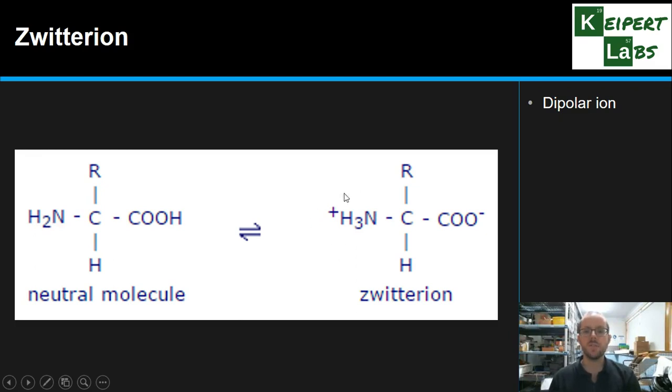And so most of the time, in solution anyway, the amino acid tends to exist in this form. We call it a zwitterion, which has both positive and negative charges. It comes from the German word for two, which is zwei. So it's like a two ion, because it's an ion that's got both positive and negative parts. So it's neutral overall, because the positive and negative kind of cancel each other out, but they both exist in that situation.